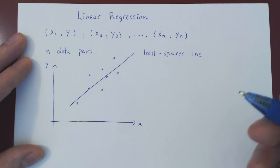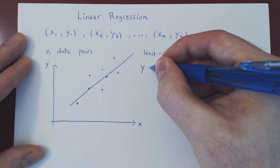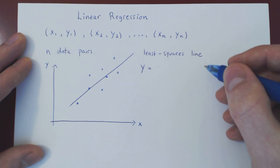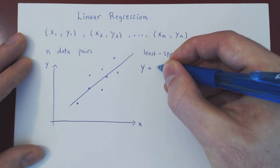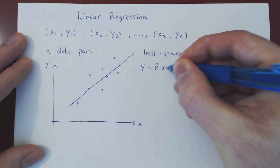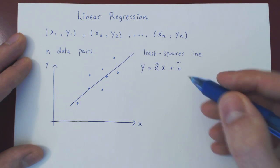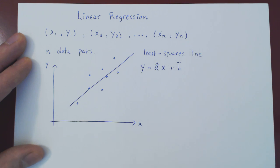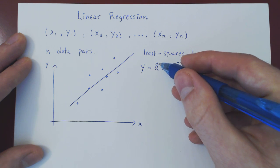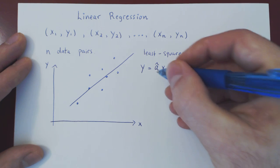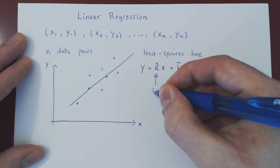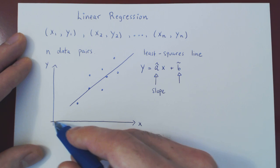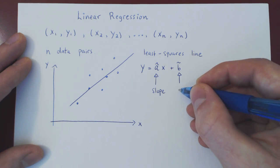Of course it's a line, so it's given by a linear equation. We write y equals â times x plus b̂ — where â is the multiple of x giving you the slope, and b̂ is the y-intercept, the constant term. The hat notation on a and b will be made clear later when we discuss statistics in more detail. So â is the slope of your line of least squares, and b̂ is the y-intercept — if you set x to zero, the y value will be b̂.